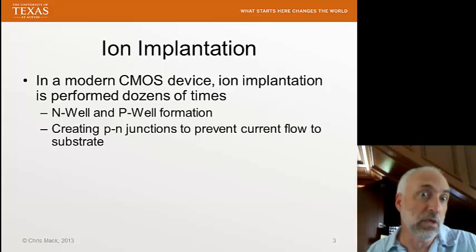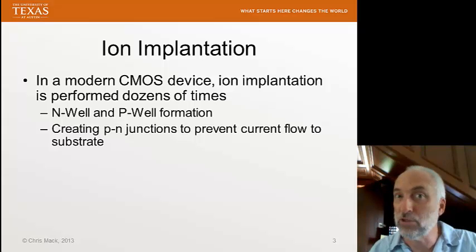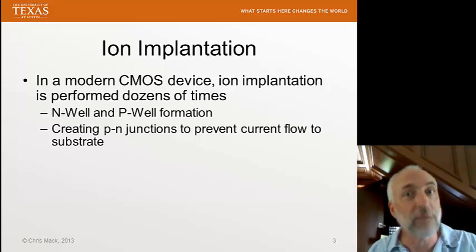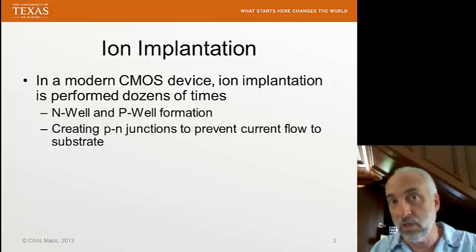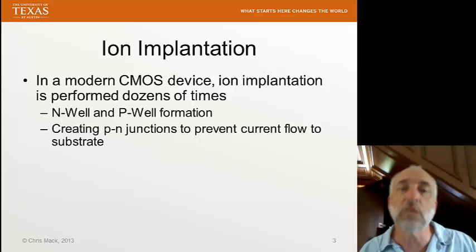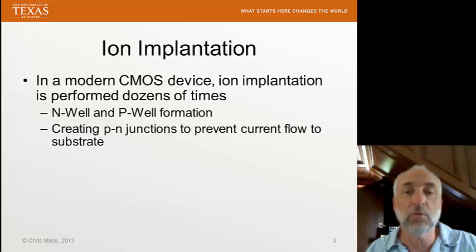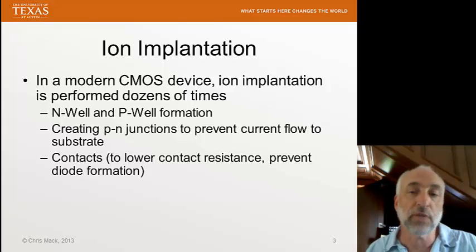A reverse-biased PN junction will prevent current from flowing. So if we stick PN junctions in the right place with the right properties so that they remain reverse biased the entire time our device is operating, we will be able to create avenues that block any potential current flow — for example, current flow to the substrate. We'll frequently add dopants in regions to create these junctions and prevent stray current.